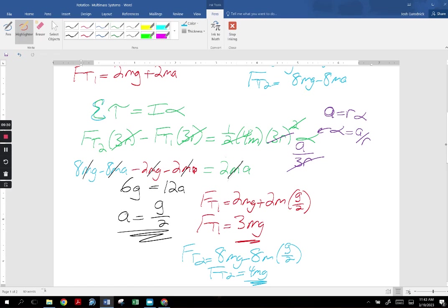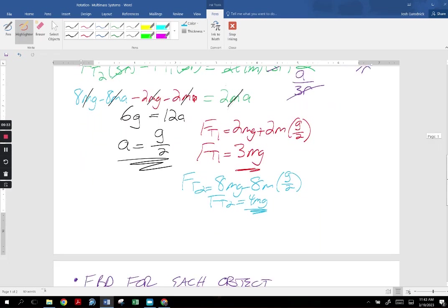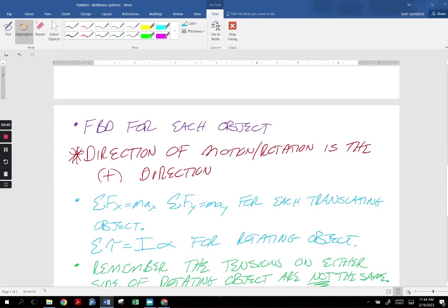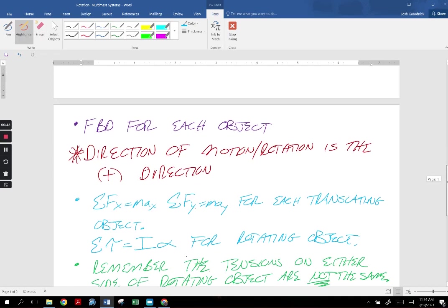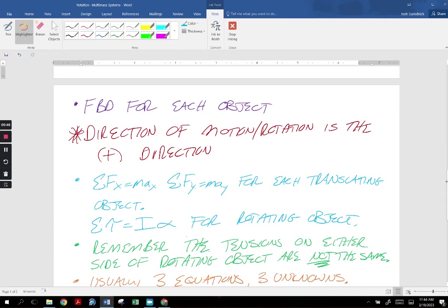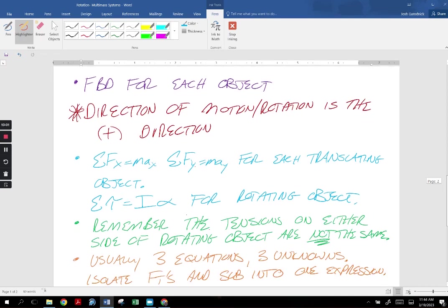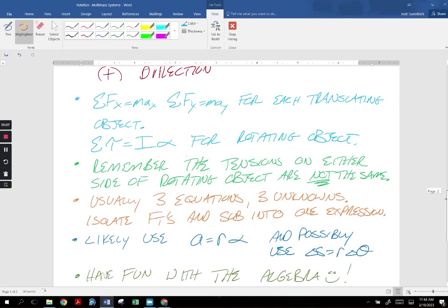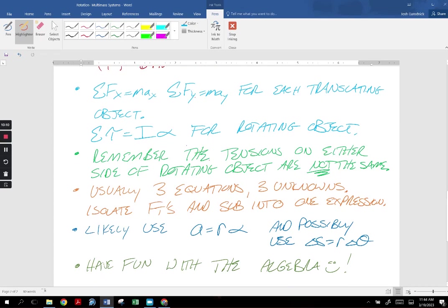Let's summarize this. Rules are, draw an FBD for each object. And don't forget that direction of motion is the positive direction. You'll do the sum of the forces in the X and the Y for each translating object. Remember, translational means just center of mass moving. And you also do the sum of the torques for any object that is rotating. And a key point is that the tensions cannot be the same. If the tensions were the same, the net torque is zero, and the thing doesn't rotate.